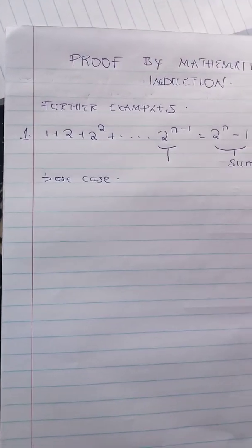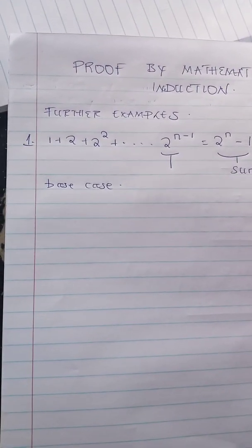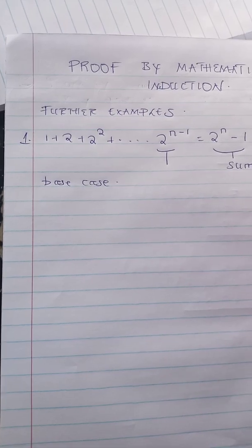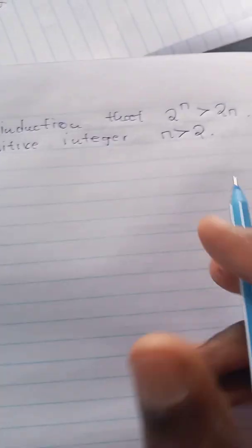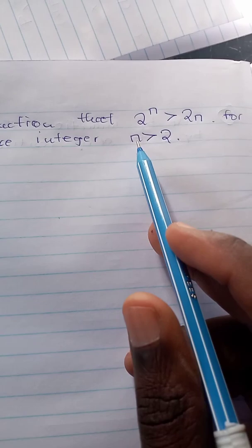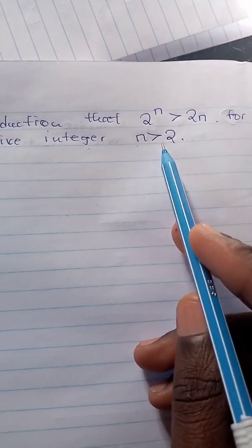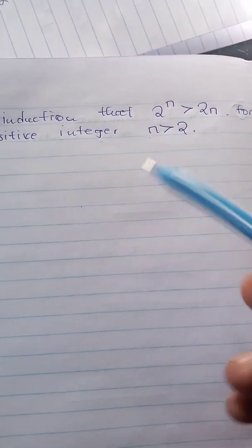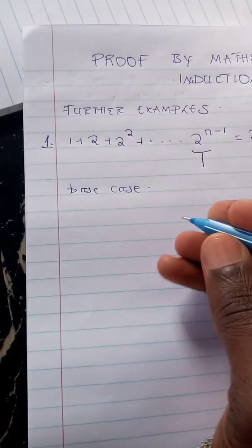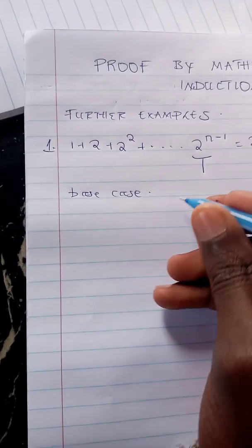Sometimes when they don't tell you where it's starting from — as you can see from another example here, they say n is greater than two — so when there is no condition given, you can of course start with n is equal to one.